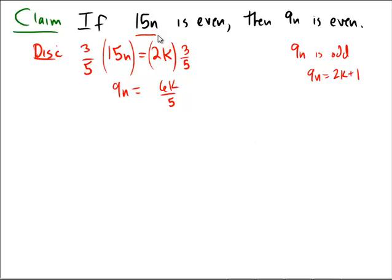So, if 15n were to be even, then that would mean that my evenness must come from the n. The factor of 2 must come from the n. So, instead of that, I'm kind of being led down this path of thinking of 15n being even, implying, instead of looking at 9n, let's use the factor. Try to show that n must be even.